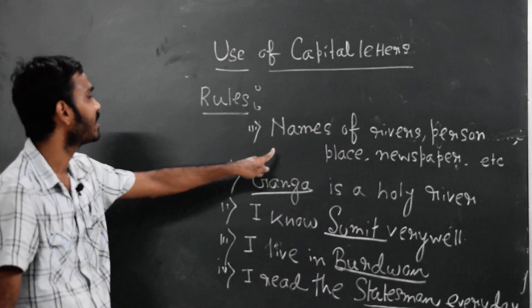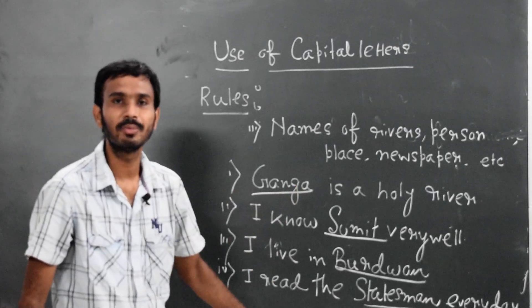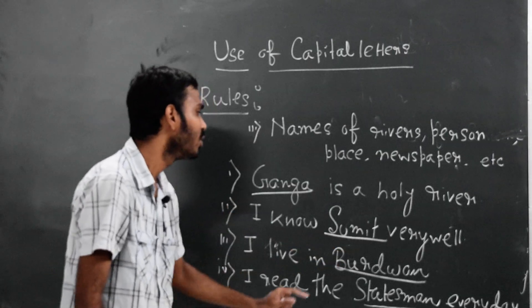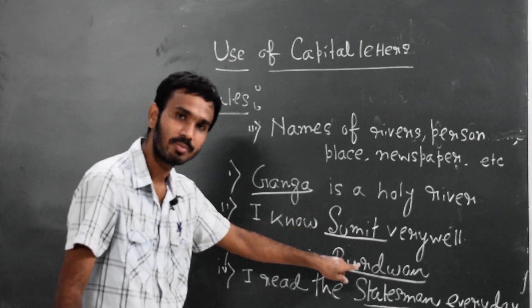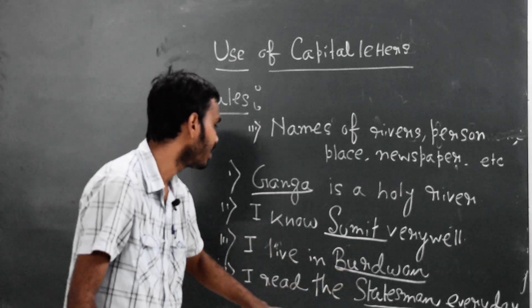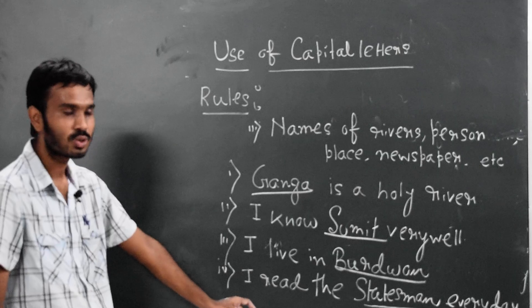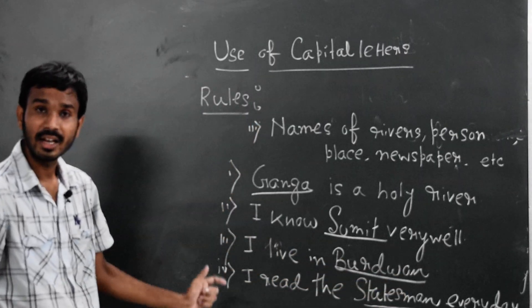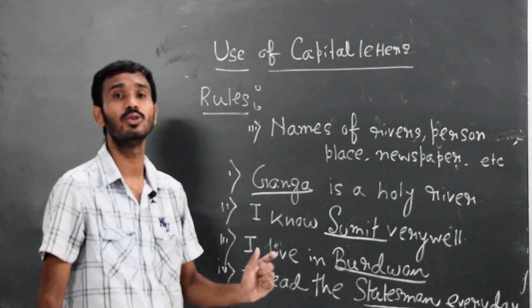The third rule: names of rivers, persons, places, newspapers, etc., use capital letters. First example: Ganga is a holy river. Ganga, being a river name, begins with a capital letter. Second: I know Sumit very well. Sumit, a person's name, begins with a capital letter even in the middle of the sentence. Third: I live in Burdwan. Burdwan is a place name and begins with a capital letter. Last example: I read The Statesman every day. The Statesman is the name of a daily newspaper, so it begins with a capital letter.